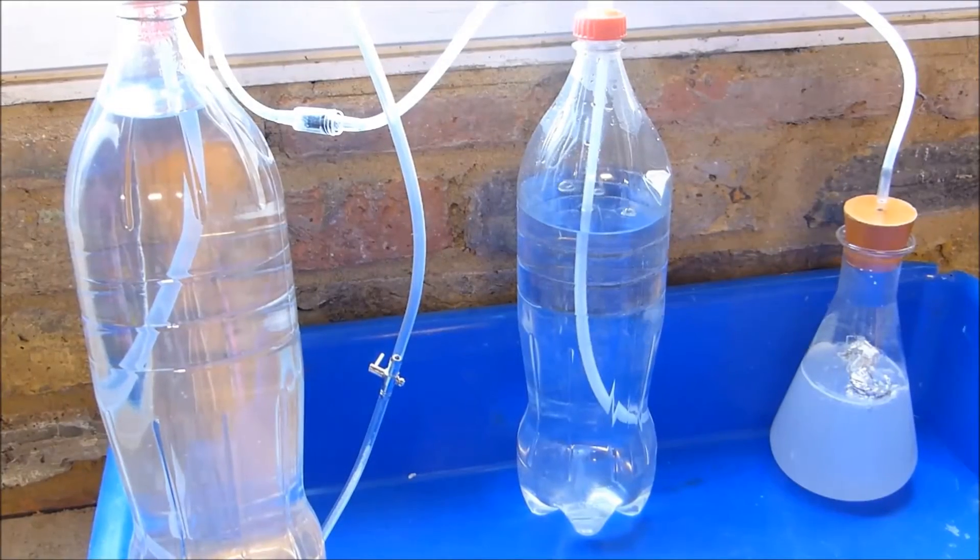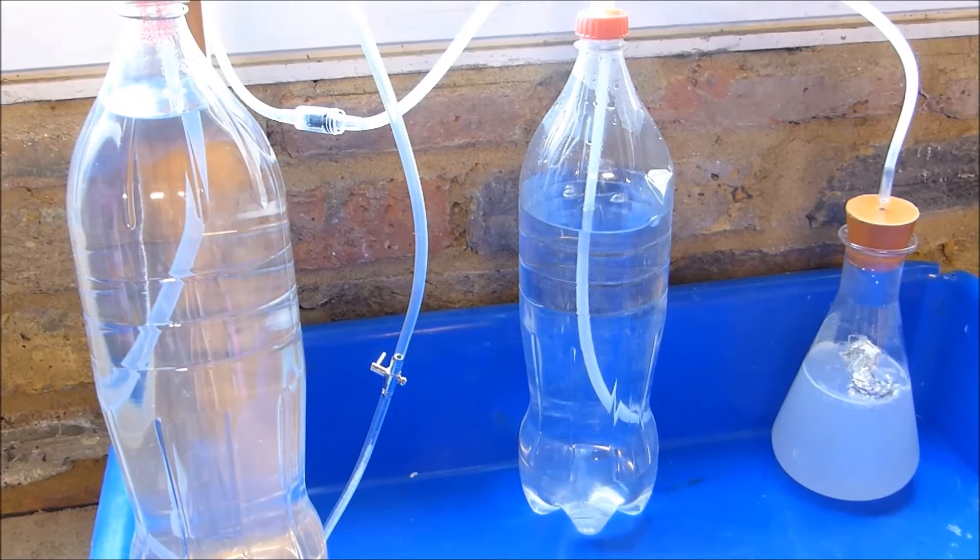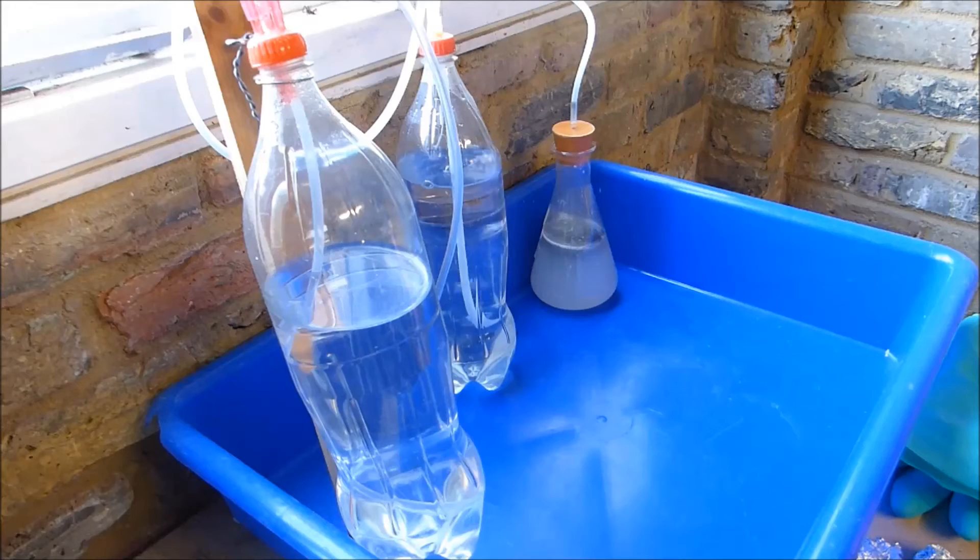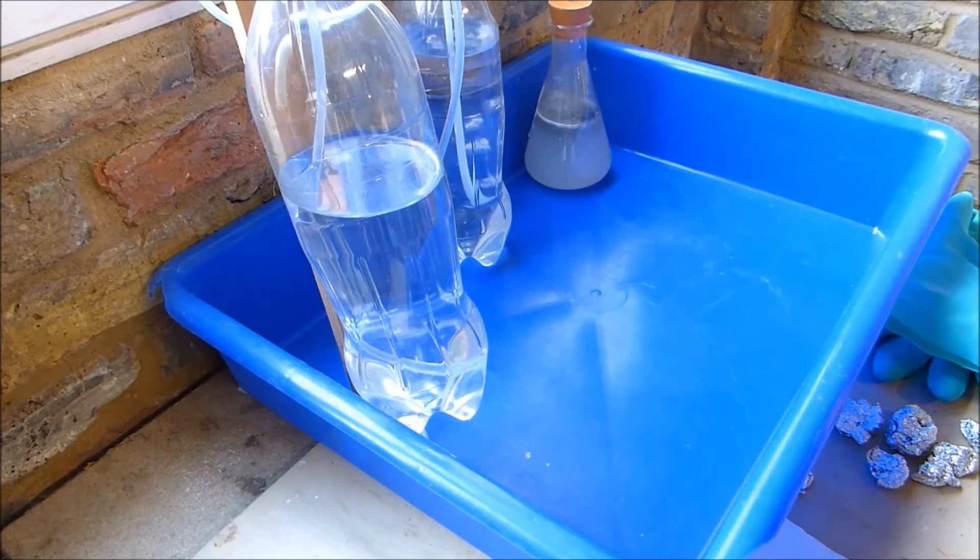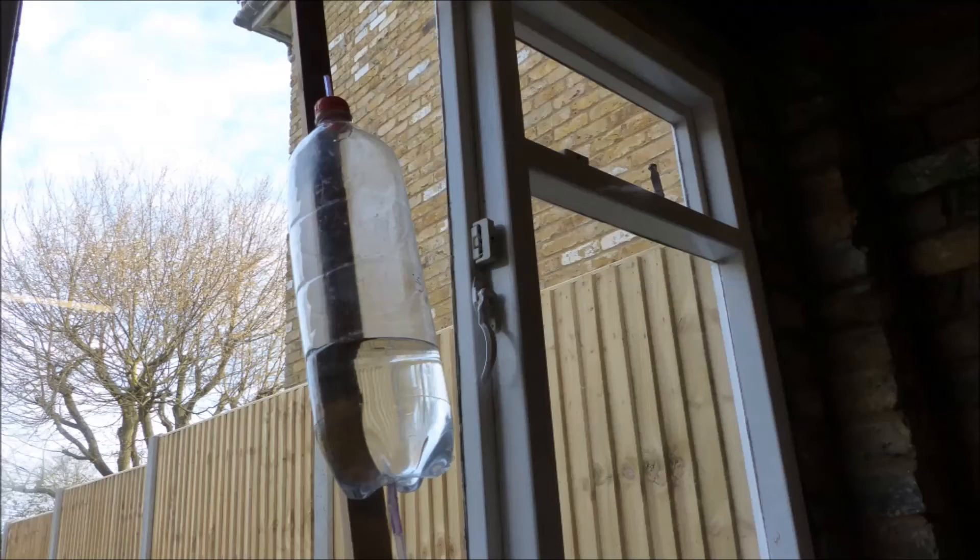The reaction starts off slowly at first with a small but steady stream of hydrogen passing through the bubbler. As production increases, the hydrogen is stored in the bottle on the left and the water displaced into the bottle above it.